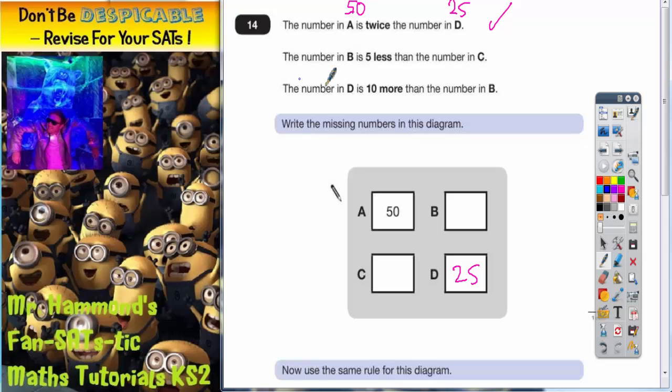Second clue. The number in B is 5 less than the number in C. Well, we don't know B or C. This clue talks about B and C. Well, we don't know either of them, so at the moment, the second clue isn't much use to us.